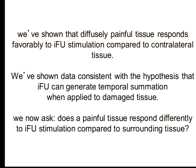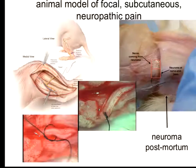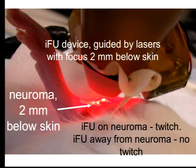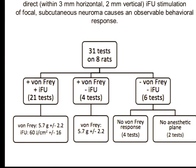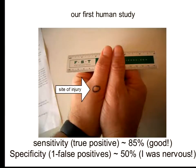We showed that diffusely painful tissue responds favorably to IFUS stimulation, very consistent with the hypothesis of temporal summation applied to rats. This is a model of subcutaneous neuropathic pain — again, partial ligation with neuroma formation, where the neuroma was two millimeters below the skin. We did tests, and results were very consistent with the Von Frey response. Interestingly, rats that did not respond to Von Frey did not respond to IFUS stimulation either, and rats with a Von Frey response — that's a palpation response — responded very consistently with IFUS stimulation.